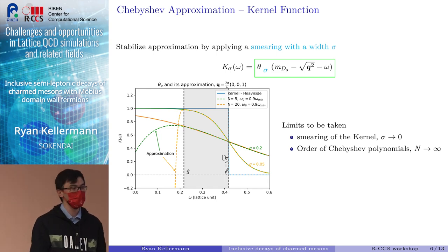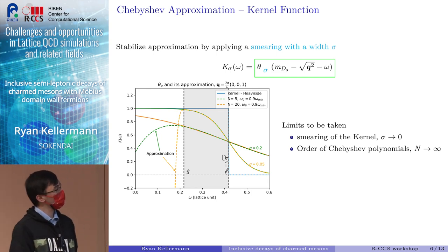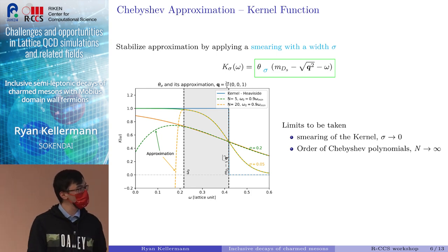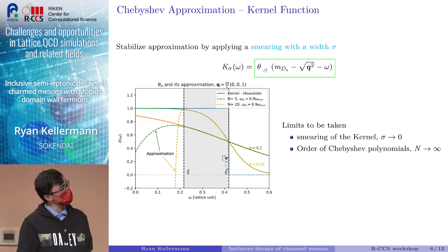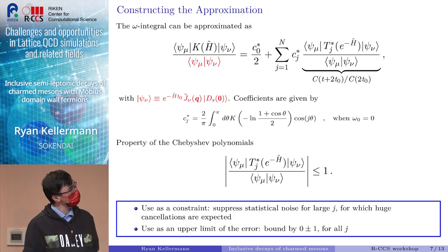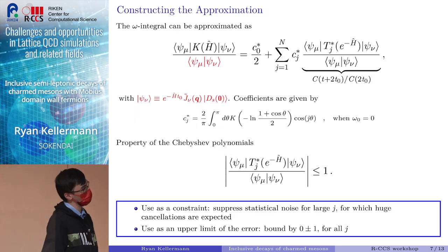We already see that our approximation becomes a lot smoother, and the approximation itself seems to fit the sigmoid function quite well. This is a possible choice for our kernel function, but by doing it like this, we introduce an additional problem that we have to solve later on, which is, instead of just having to take the order of the Chebyshev polynomials n to infinity, we now also have to take the smearing of the kernel function to 0. This introduces an additional component to our systematic error. But this is the price we have to pay to obtain a reasonable approximation.